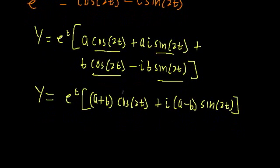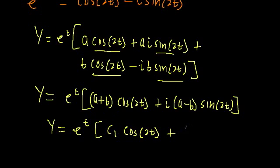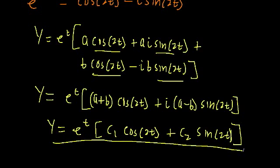What we like to do is simplify it once more by redefining these constants. Since a is a constant and b is a constant, then a plus b is also a constant value, and a minus b times i is a constant value - an imaginary constant, but a constant nonetheless. So we can redefine it in a more standard form as just e to the t times [c₁·cos(2t) + c₂·sin(2t)]. Here the i is incorporated into this coefficient. There we have it - here's the general solution in a fairly more intuitive or handy form.